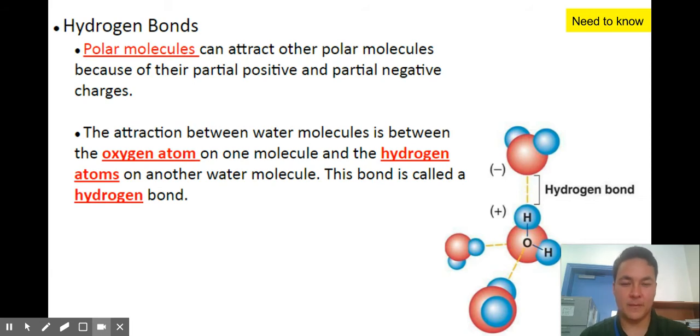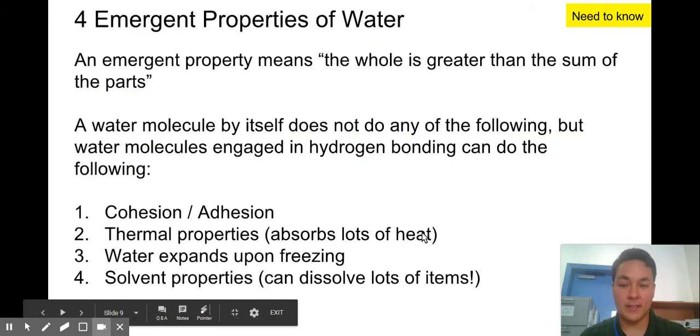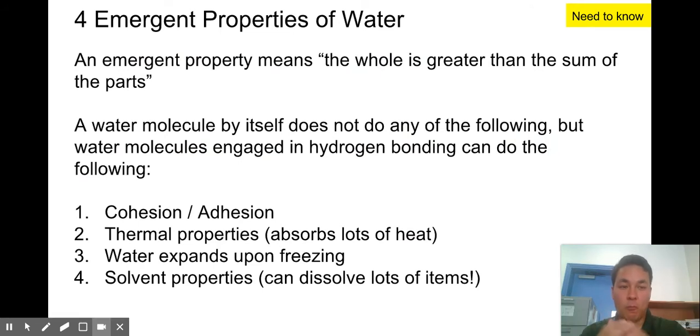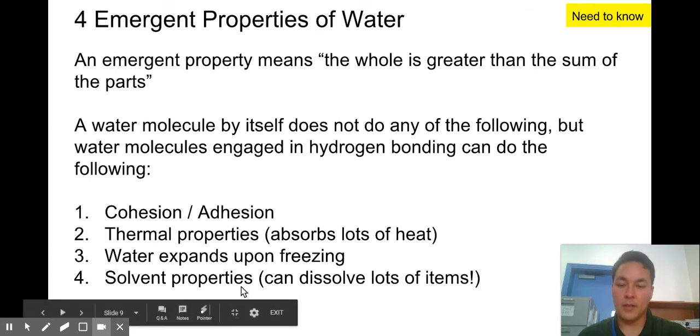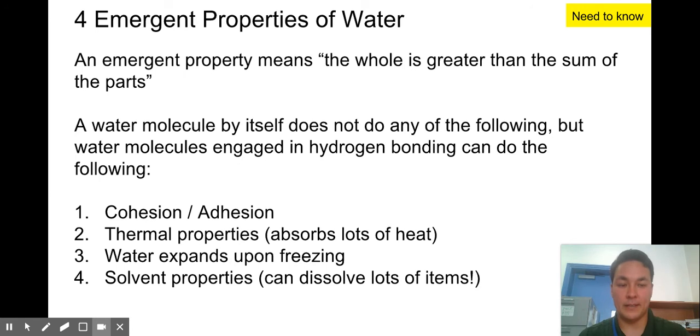Why is this important, you might ask? Well, very good question. It's important because it's going to give water emergent properties. That means one water molecule by itself can't do these four things. But a lot of water molecules together with the power of hydrogen bonding, which is due to polarity, can do these four properties. And these four properties allow for life.